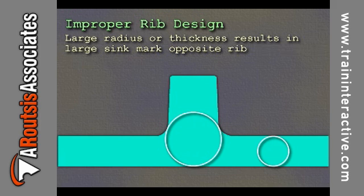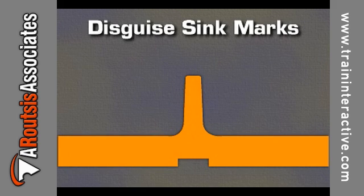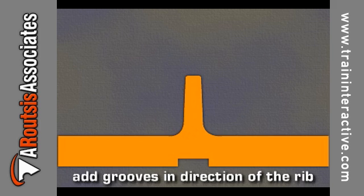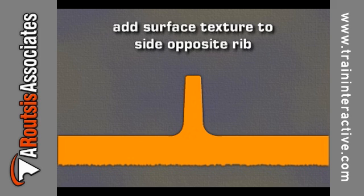With proper rib design, only a small sink mark is present. In the case of a wide rib with the same radius, or the same width with a larger radius, the circle will be much larger. Both of these rib designs would result in a large sink mark on the part wall. Sometimes sink marks need to be disguised. One easy method is to add grooves to the part in the direction of the rib. These not only disguise the sink mark, but also can reduce the circle size which evens out the shrinkage. Another method is to add surface texture to the side opposite of the rib, which increases light diffraction and makes the sink mark less noticeable.